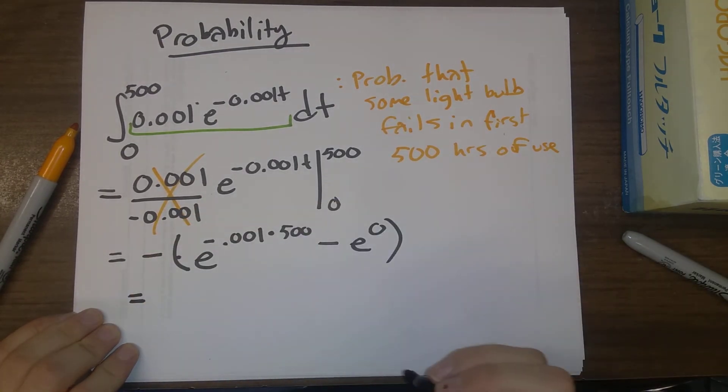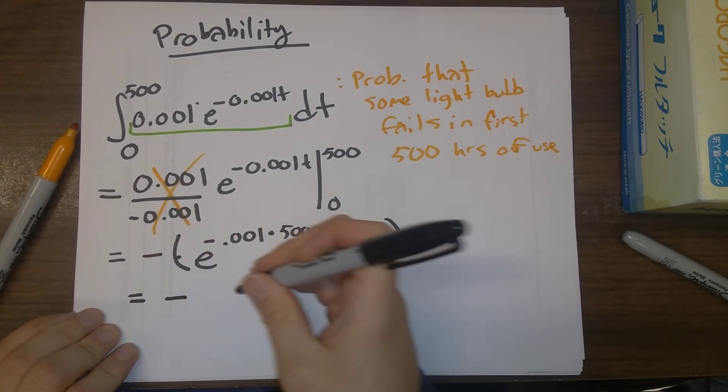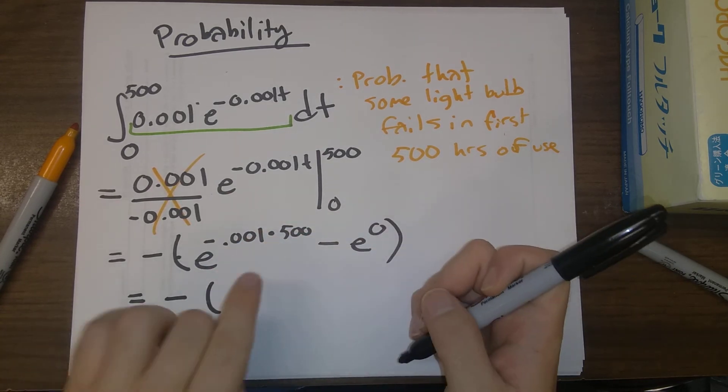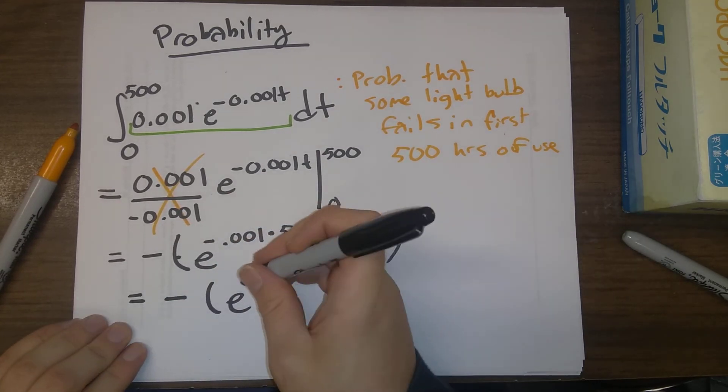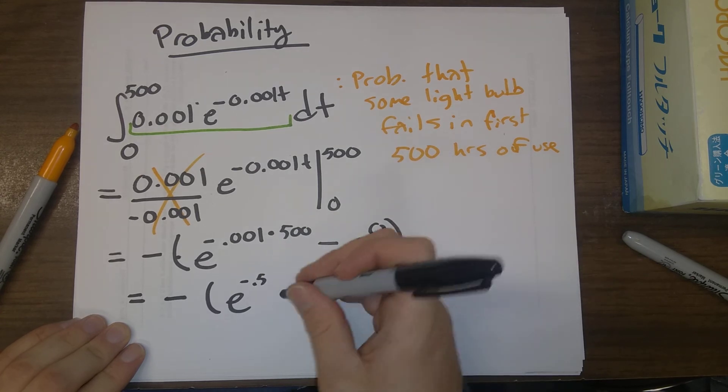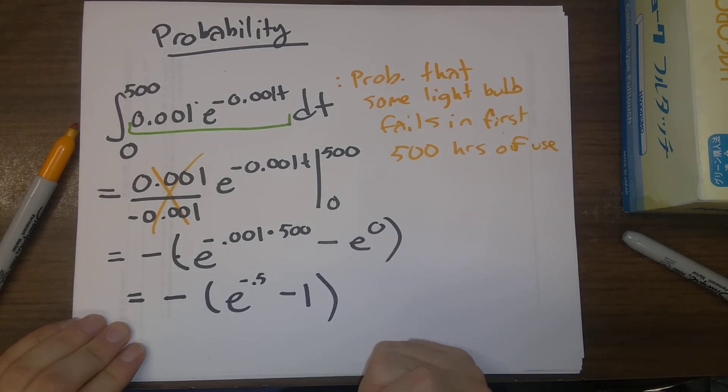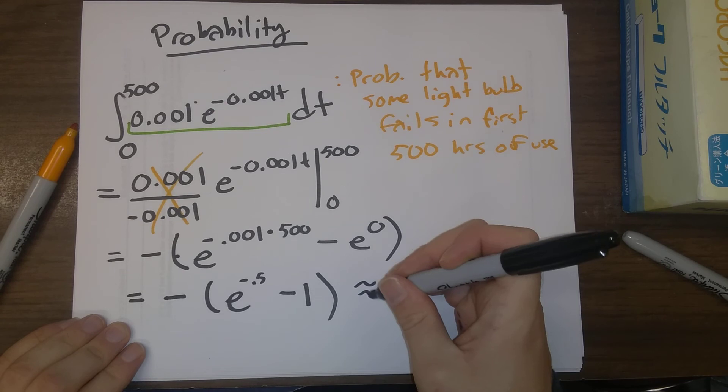So this ends up being negative of e to the, this times this, is minus 0.5. e to the 0, of course, is 1. And so if you punch this into a calculator, you get 0.39.